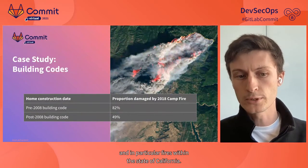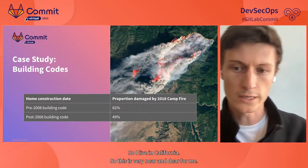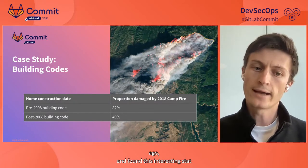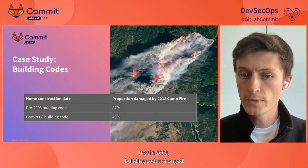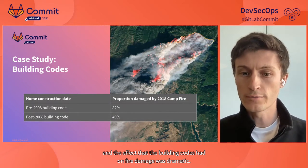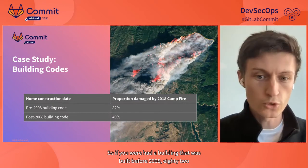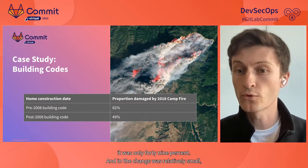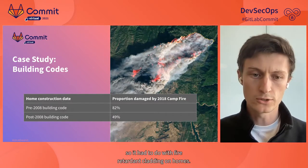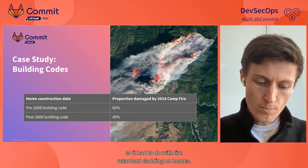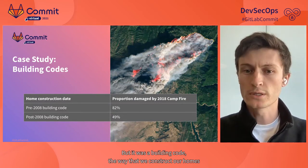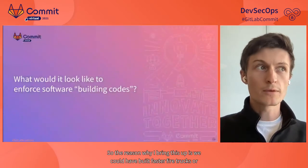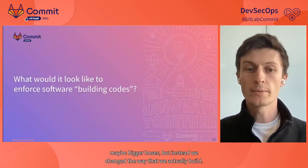Stepping outside of security and software engineering, I want to talk about building codes and fires in California — this is very near and dear to me. I was reading about the Camp Fire that happened about two or three years ago and found this interesting stat: in 2008, building codes changed and the effect on fire damage was dramatic. For buildings built before 2008, 82 percent of properties were damaged. For buildings built after 2008, it was only 49 percent. The change was relatively small — it had to do with fire retardant cladding on homes — but it was a building code that had a dramatic effect on safety.